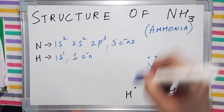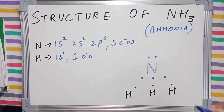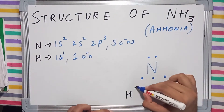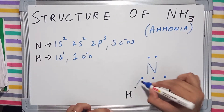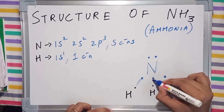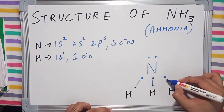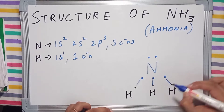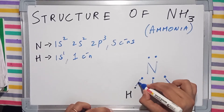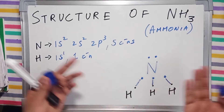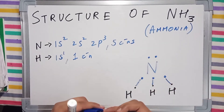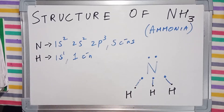Nitrogen is going to make 3 bonds — 1st bond, 2nd bond, and a 3rd bond. This is the structure of ammonia.